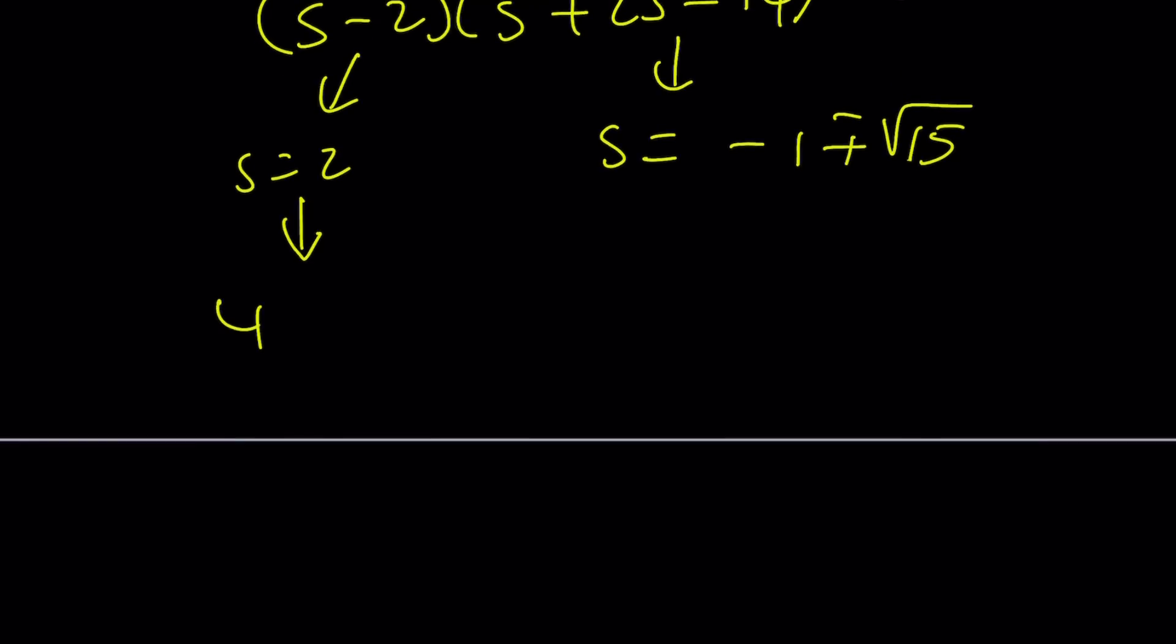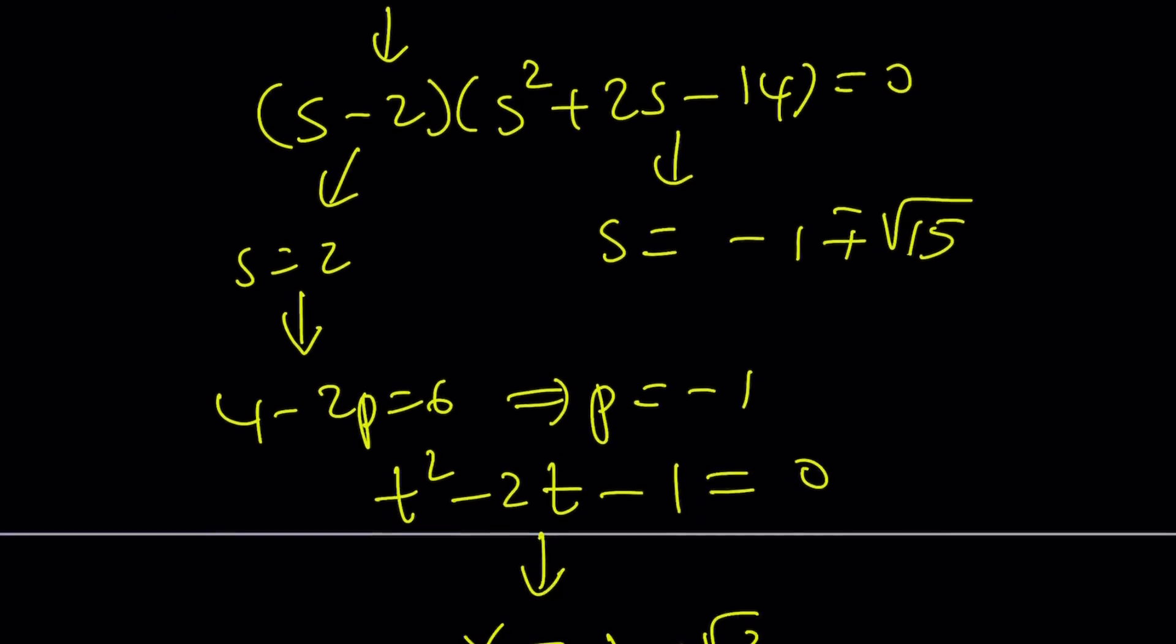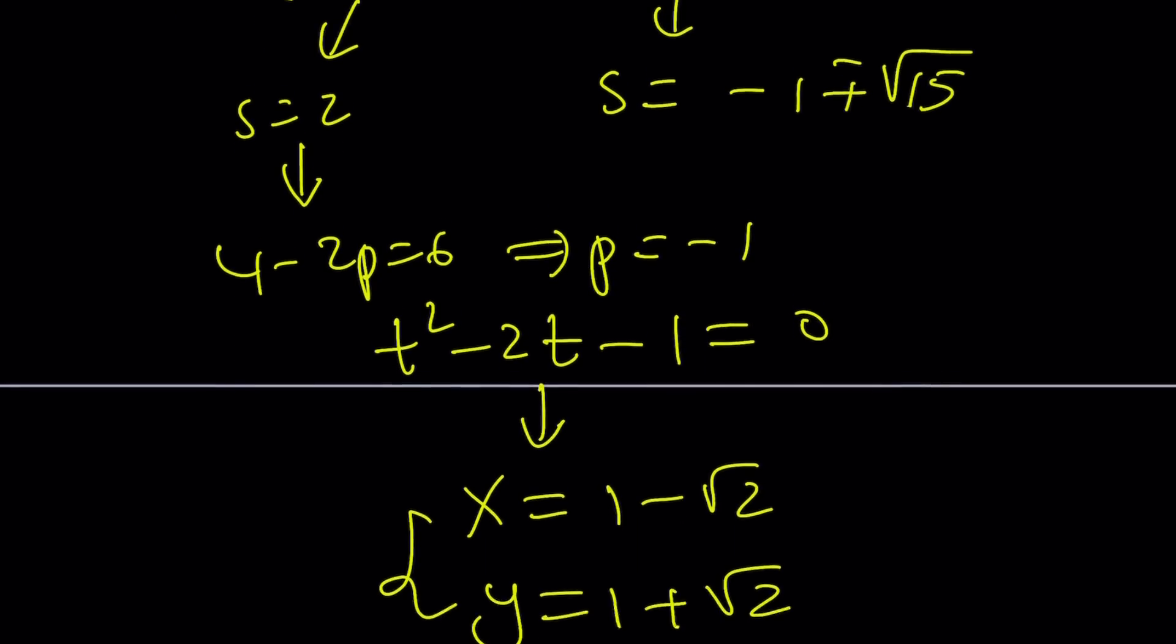If s is equal to 2, then we get 4 minus 2p equals 6, which means p is equal to negative 1. So you're kind of thinking the two numbers whose sum is 2 and whose product is negative 1. And by using Vieta's formulas, you can produce a quadratic that satisfies this. And the roots are going to be 1 minus root 2 and 1 plus root 2. And I'm going to call these x and y because those are x and y values. And obviously, they are interchangeable.